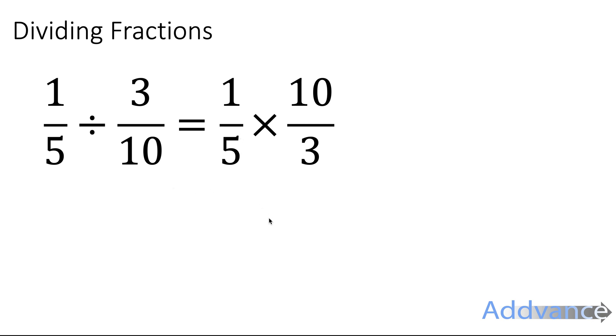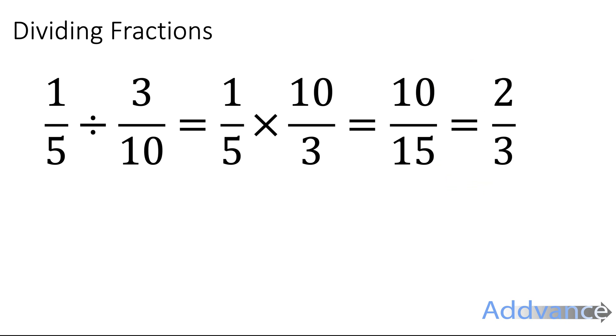Now we just continue as we multiply fractions. 1 times 10 divided by 5 times 3. That's 10 fifteenths. 10 fifteenths can be simplified by dividing by 5 and we'll get 2 thirds which is the final answer.